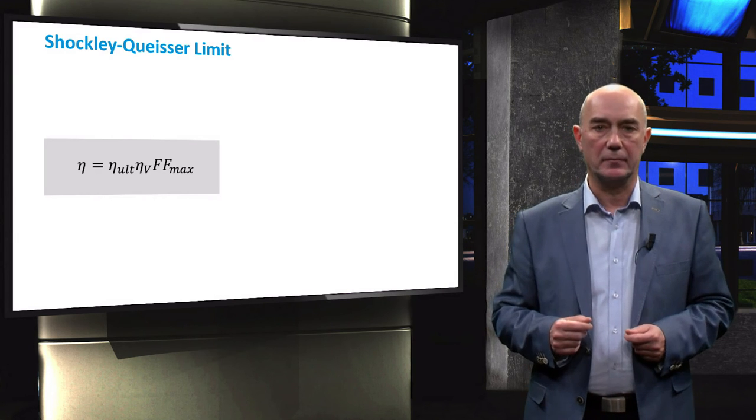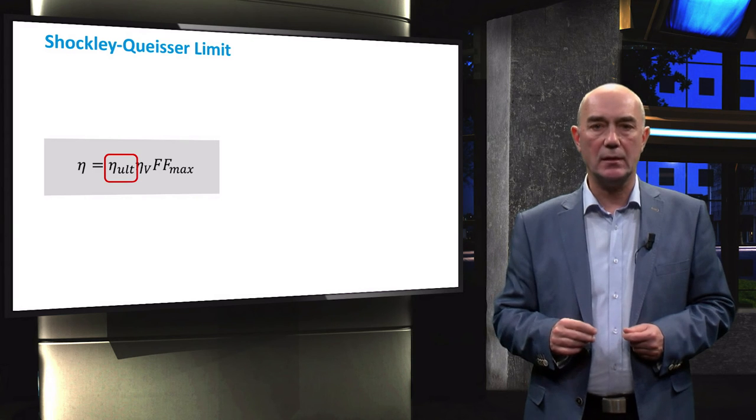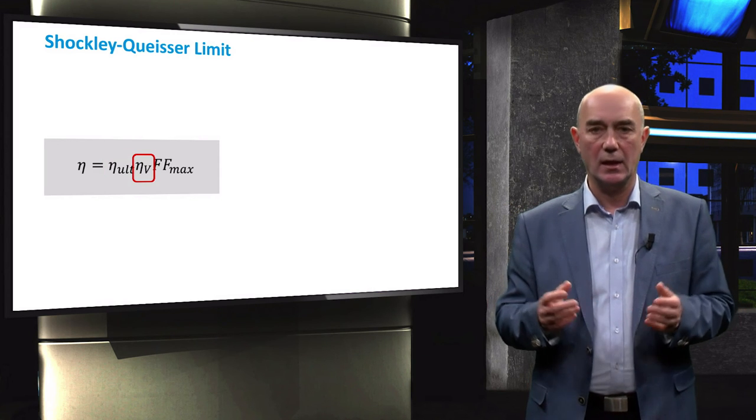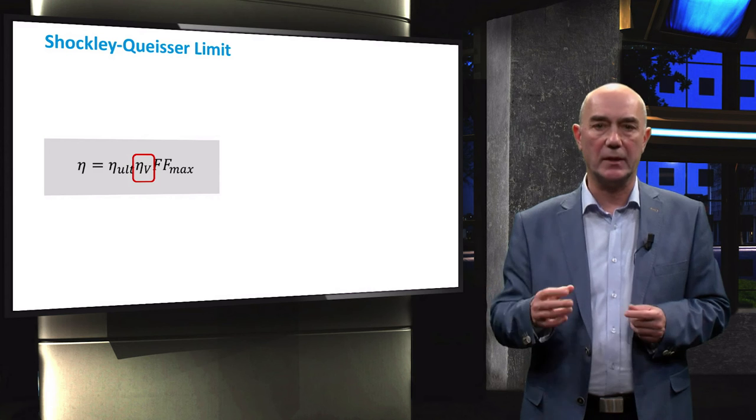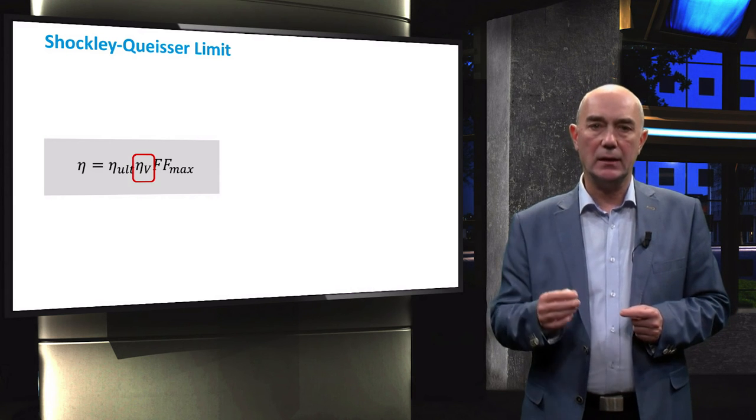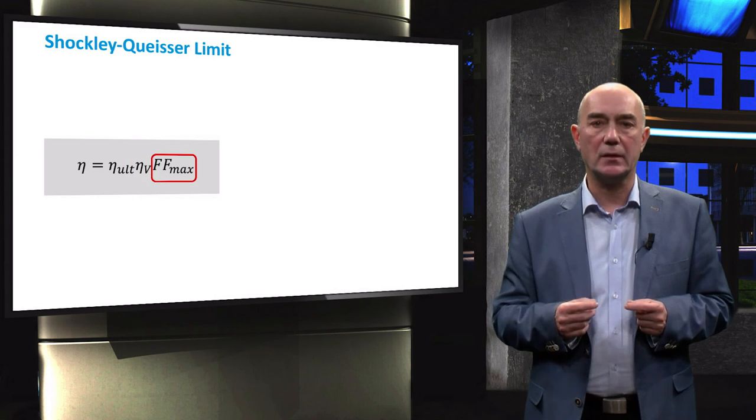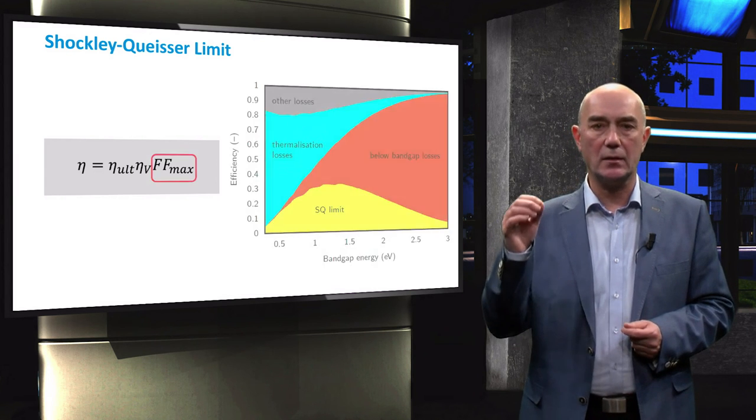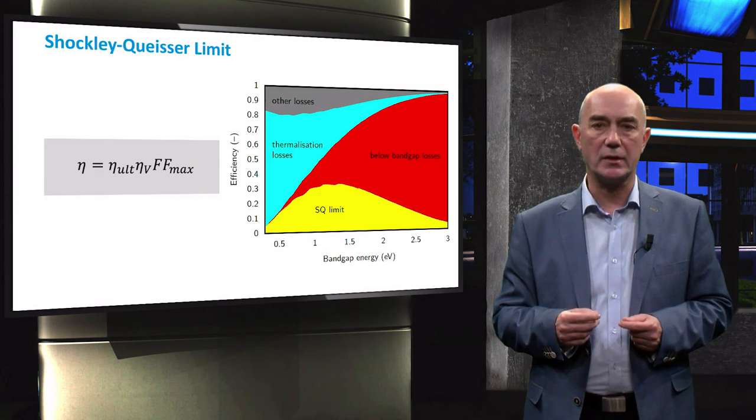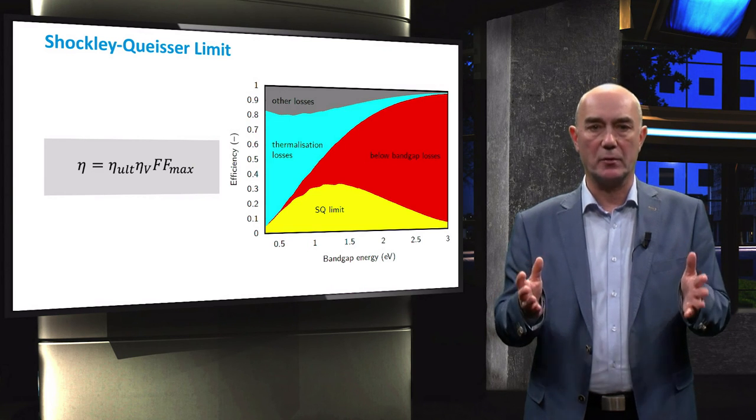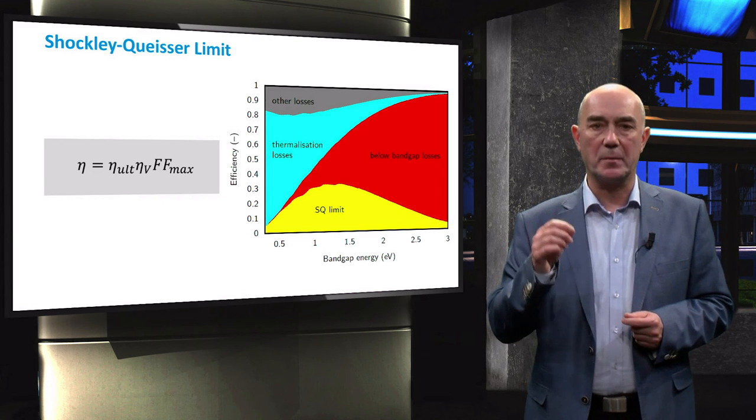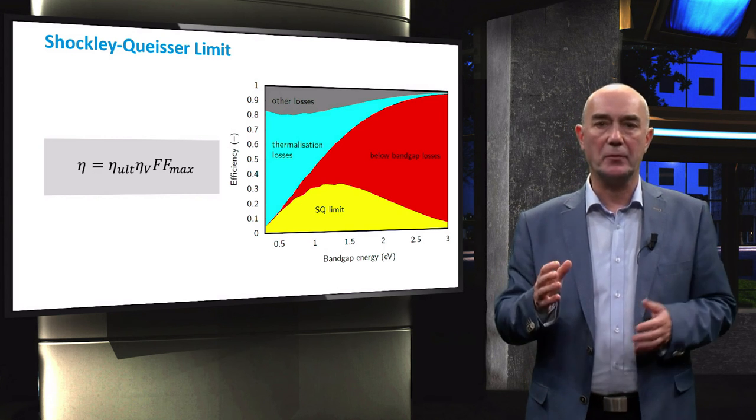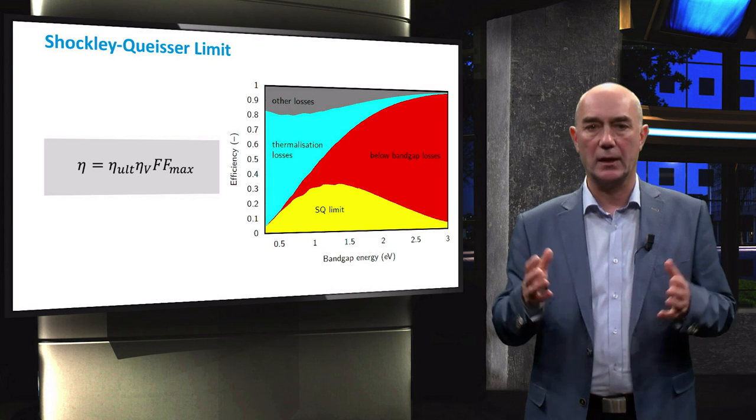So let's put everything together. We have the ultimate efficiency, which takes the spectral mismatch into account. We then have the band gap utilization efficiency, which uses the smallest possible J0 value based on blackbody radiation. Finally, we have the maximum fill factor, which is also dependent on the VOC. Combining all of them, we can get the Shockley-Queisser limit for energy conversion efficiency based on the band gap of solar cell absorber plotted here. For AM 1.5 spectrum, the maximum efficiency is 33.1%, can be found for an absorber having the band gap of 1.34 eV.